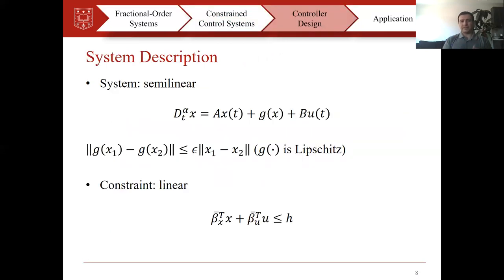Consider this system — a semi-linear fractional order system: D_t^alpha of x is equal to A*x plus g(x) plus B*u(t). This system has two parts: the first is a linear part and the second is a nonlinear part represented by g(x). We assume that the linear part is known and the nonlinear part is unknown, but the only thing we know about g(x) is that it is Lipschitz — meaning there exists an epsilon that satisfies the inequality. We also assume this semi-linear fractional order system is subject to a presented linear constraint on state variables and control.